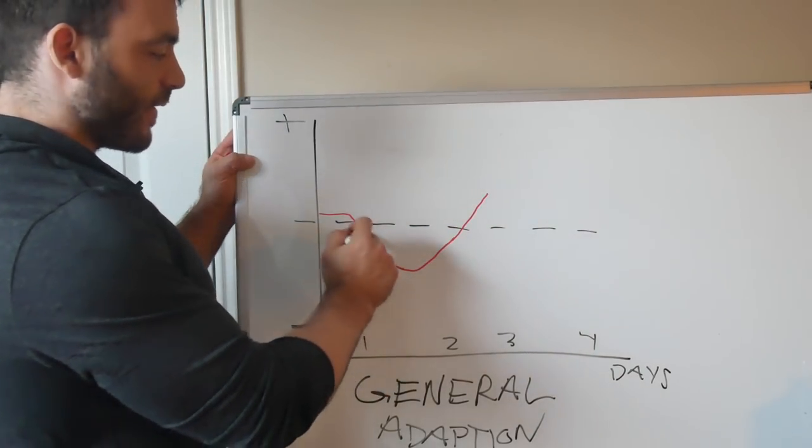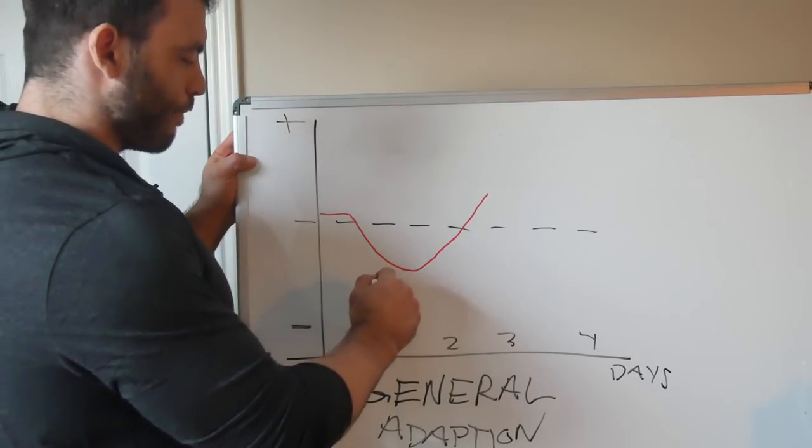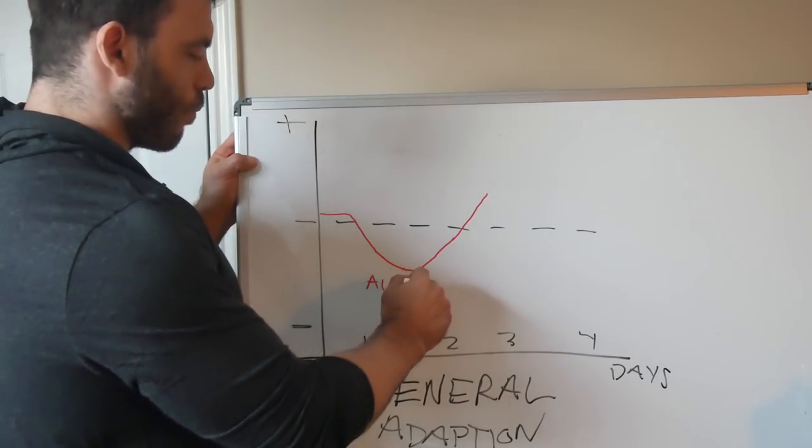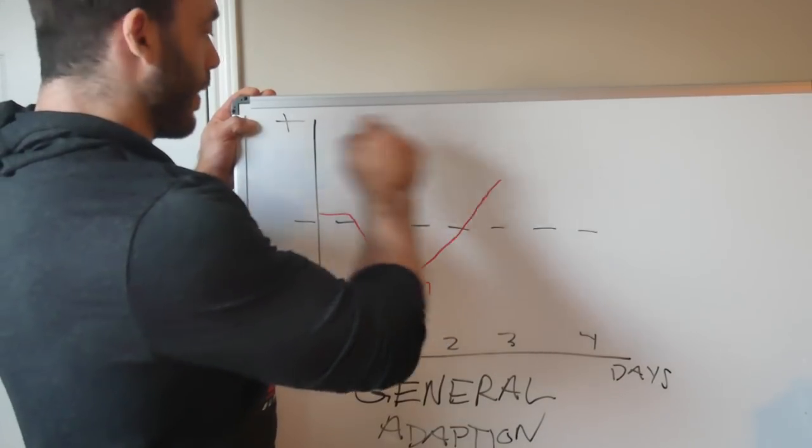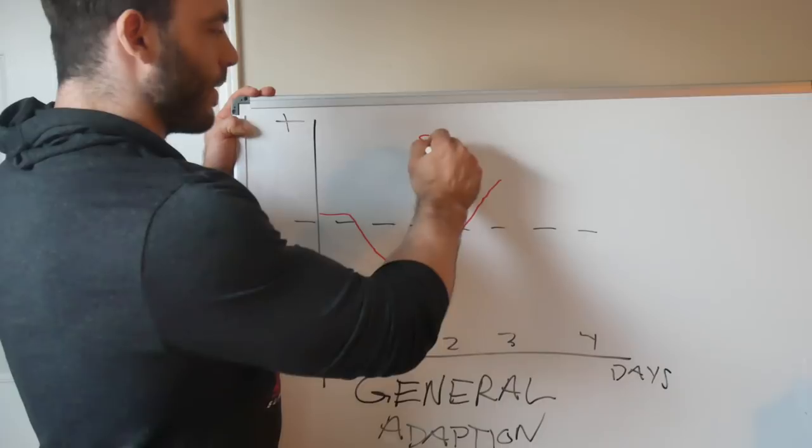So this is known as the alarm phase when your body's freaking out, why you feel sore. This phase, as your performance increases, going up towards these PRs, this is called supercompensation.